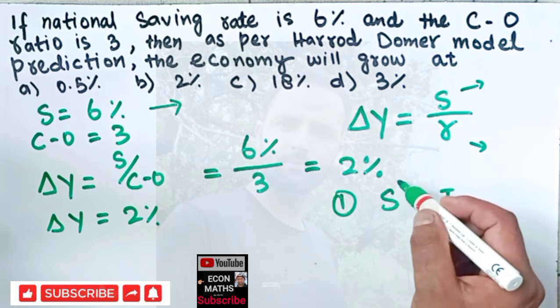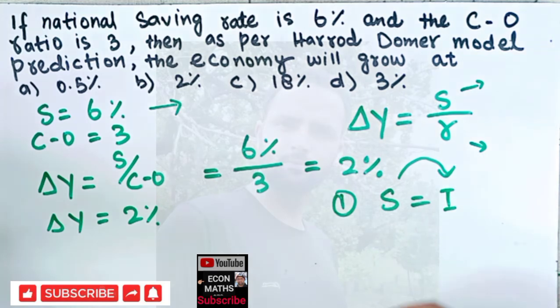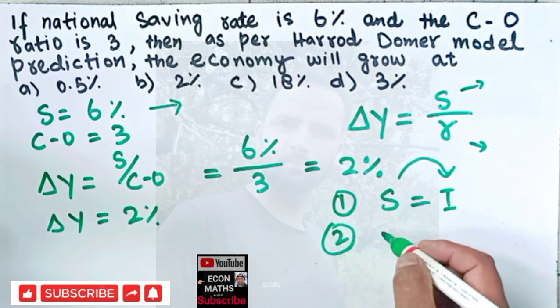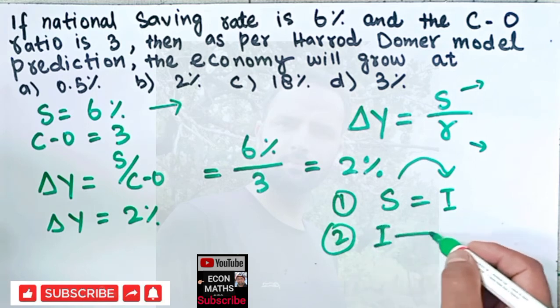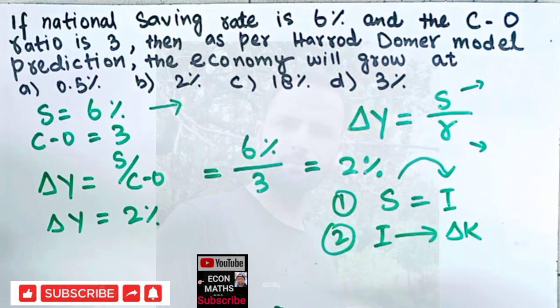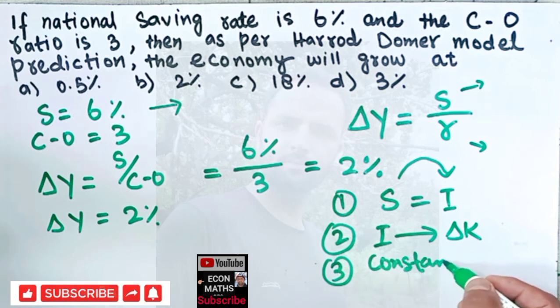Second assumption was that this investment leads to change in the capital stock, that is capital accumulation. And third assumption was we have a constant capital output ratio.